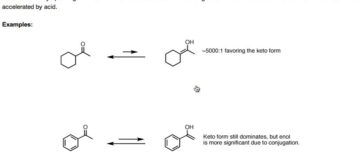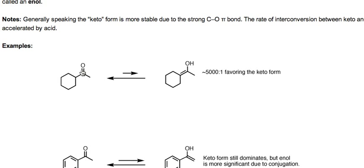In general, the keto form is more stable than the enol form. That's because we've got a pretty strong carbon-oxygen pi bond. In general, you look at most keto form favoring the enol form in the vicinity of 5,000 to 1. So for every one equivalent of enol, you've got about 5,000 molecules of the keto form. And here's a pretty typical example. Let's look at this ketone here. We're going from the ketone on the left to the keto form in equilibrium with the enol on the right.